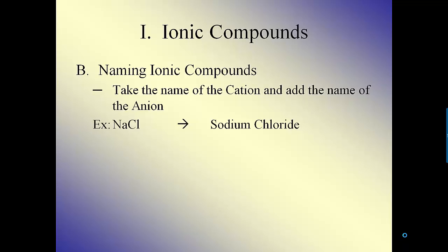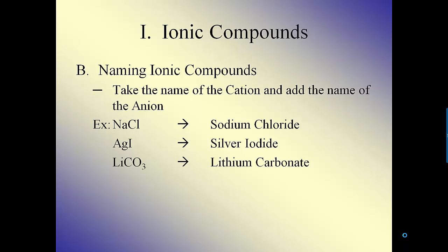For example, if we look up Na on the top, we see that it's sodium. If we look up Cl on the bottom, we see it's chloride — so NaCl becomes sodium chloride. Ag is silver from the top half of the chart. Iodine becomes iodide from the bottom half, and you get silver iodide. Li from the top half of the chart is lithium, CO3 is on the bottom half of the chart, and that's lithium carbonate.